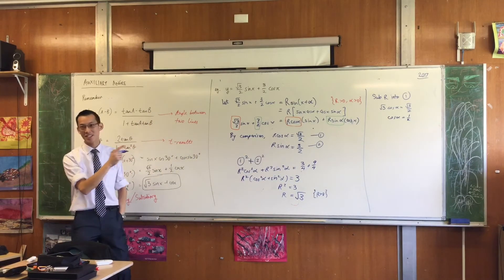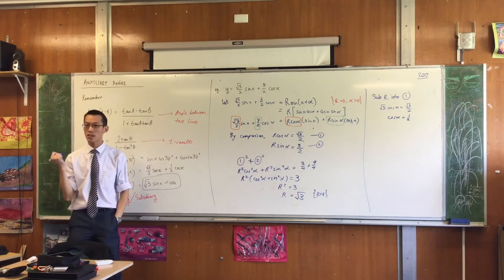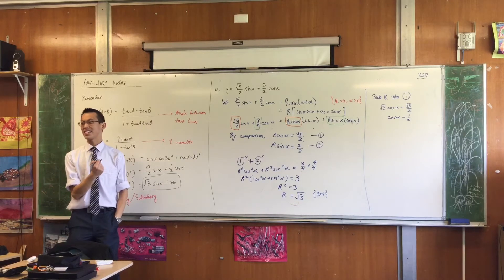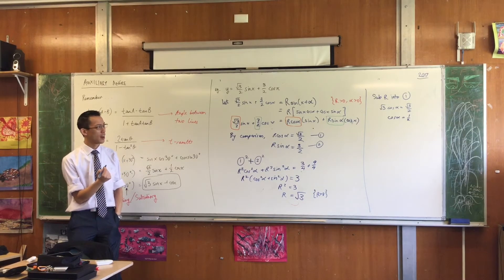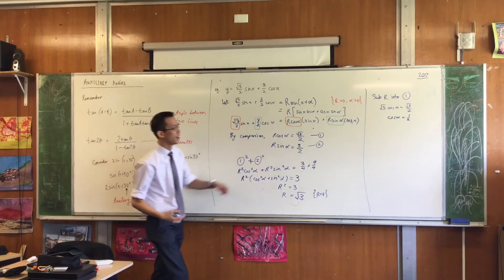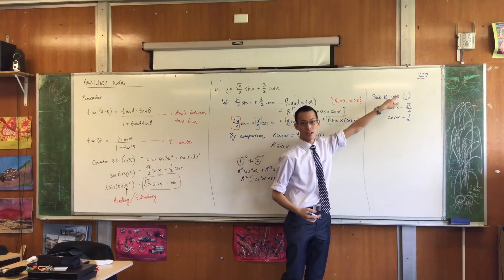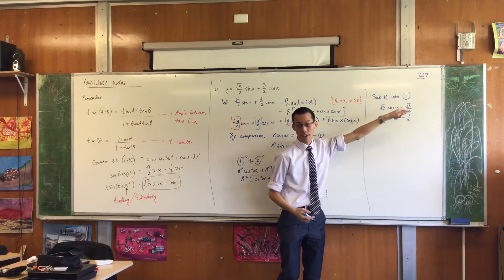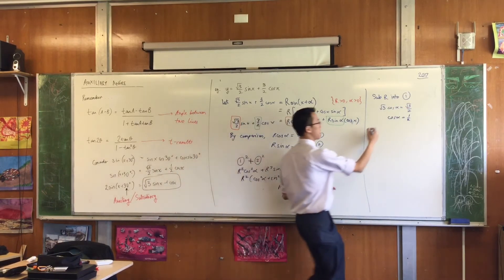Because we've solved equations like this till we were blue in the face. We know there's not just one solution to that. There's loads of solutions to that, right? In fact, there's an infinite number of solutions. So I need to restrict this in some other way. You have to do more than just sub r into your first equation. You actually have to sub it into both of them. So I'm going to do that as well.